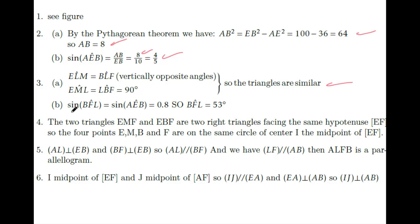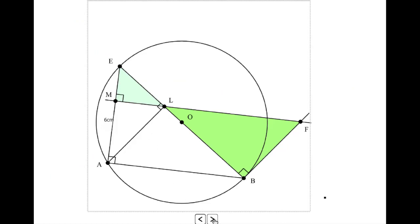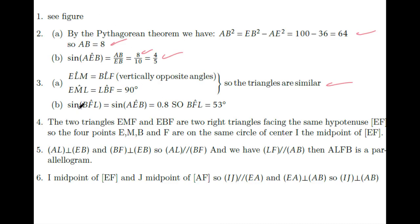Since the triangles are similar, sine of BFL equals sine of AEB. From above, sine of AEB equals 0.8, so sine of BFL equals 0.8, which gives angle BFL equals 53 degrees.